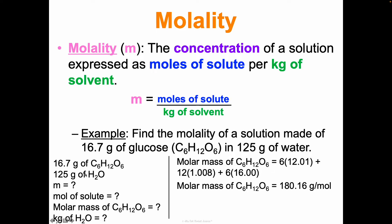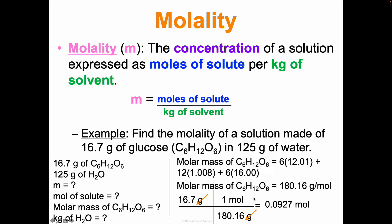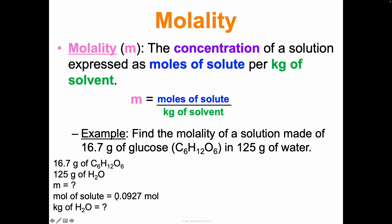I'm going to go ahead and convert my 16.7 grams of glucose to moles using molar mass. Setting up the picket fence: 16.7 grams on top. Like units need to be opposite, so 180.16 grams goes in the denominator and one mole goes on top - that allows grams to cancel. Multiplying across: 16.7 times 1 divided by 180.16 gives 0.0927 moles of glucose. Now we have our moles of solute.